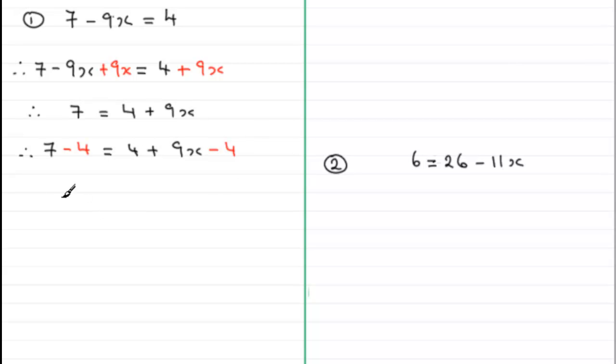That line could be missed out and go straight to this one where we take 4 from both sides and we get 7 take 4 which is 3 and realizing that 4 take away 4 gives us 0, we're just left with 9x.